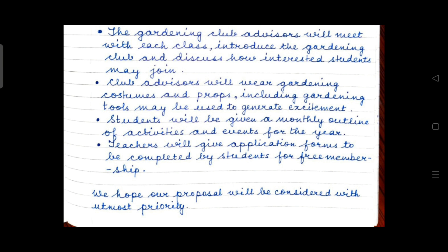In some schools, teachers ask students to mention their name and designation — for example, 'Meeta Sinha, Head Girl.' However, according to the pattern issued by the council, there is no such requirement. Mentioning the name and designation is completely optional. If your teacher has asked you not to write it, don't. If your teacher has asked you to write it, follow her instructions.